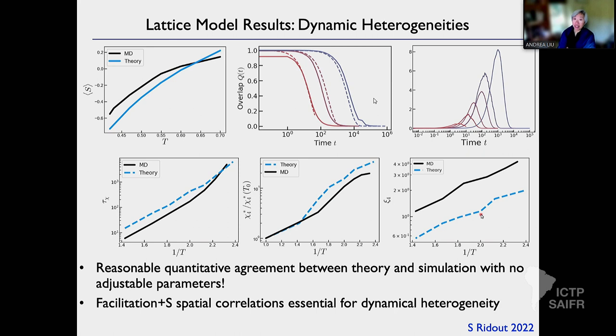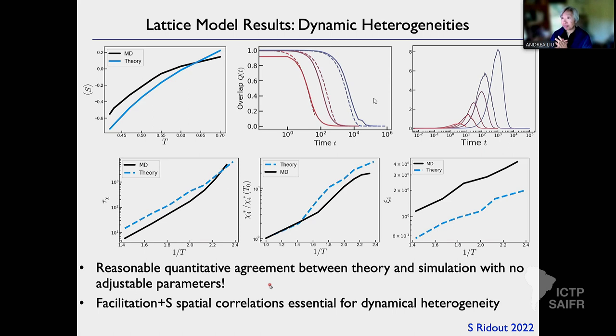The fact that this is working and the trap model did not tells us what are the key ingredients to capture dynamical heterogeneity. One is facilitation — the idea that there's some change of softness nearby due to a rearrangement here. The other key thing — and you cannot do one without the other if you want detailed balance — is that you need the spatial correlations of softness. Credit for this really goes to my graduate student Sean Rideout, who just finished last November.